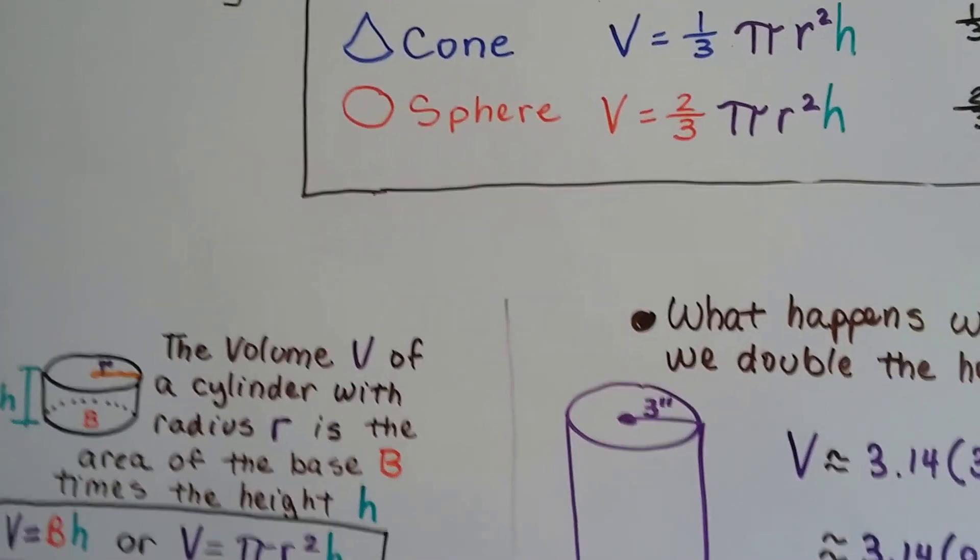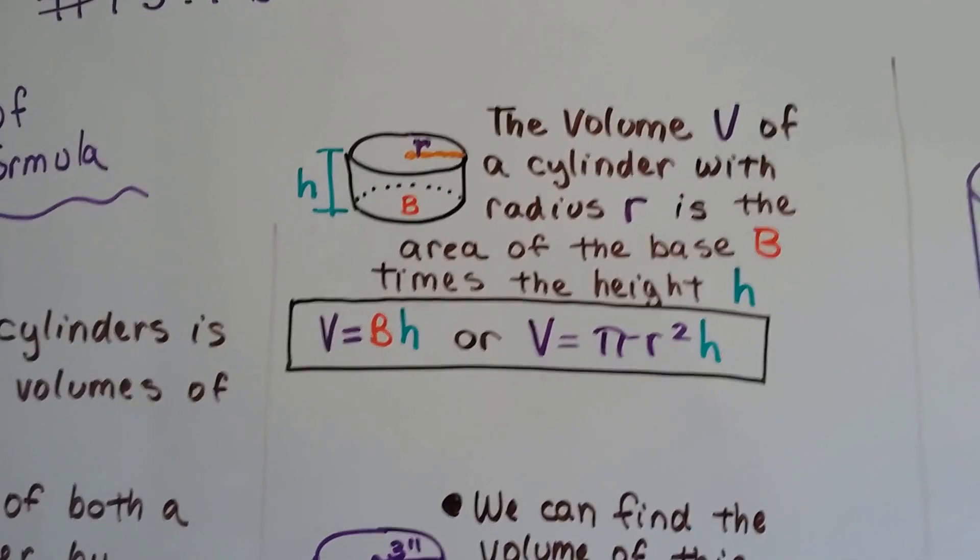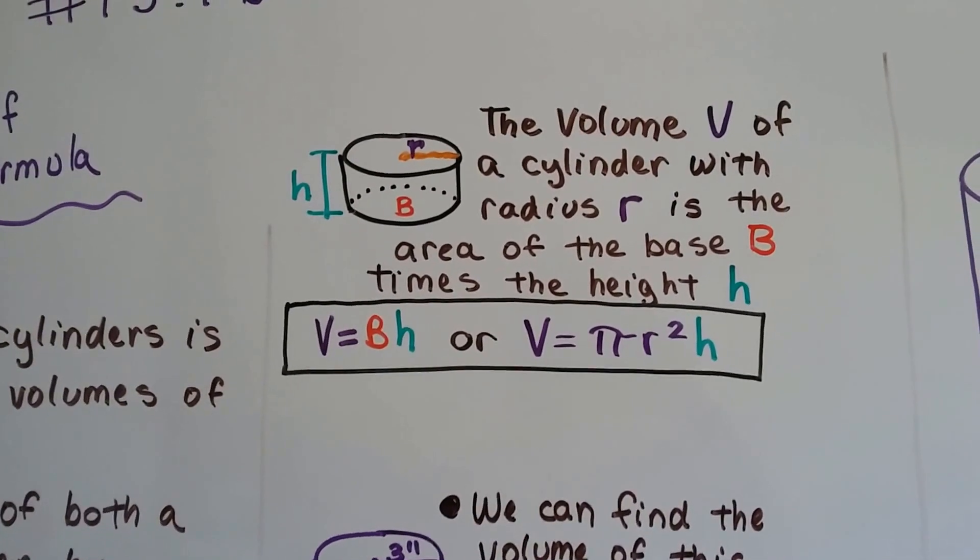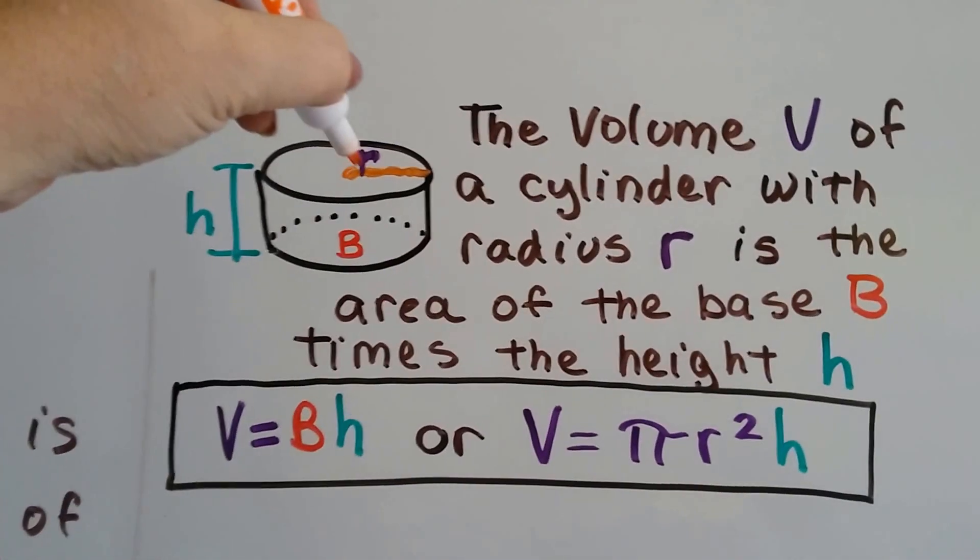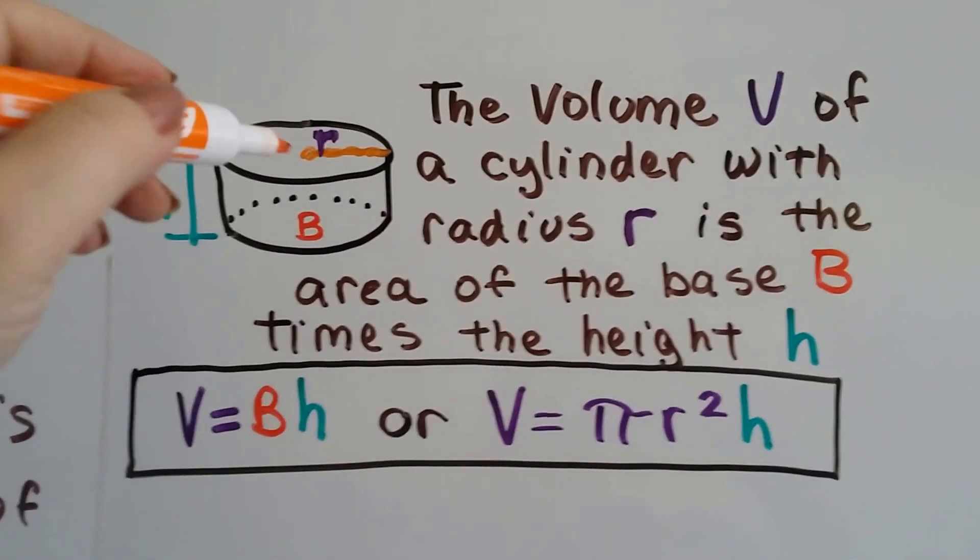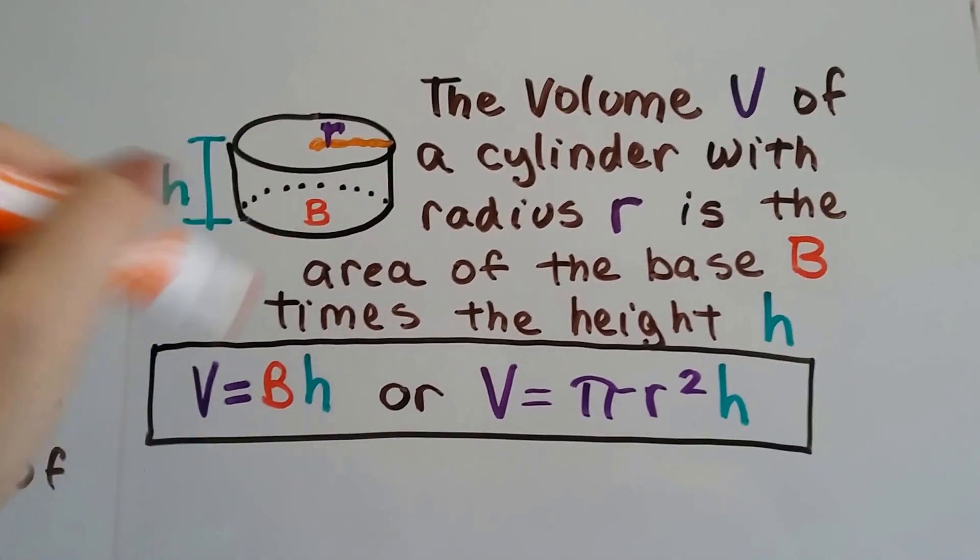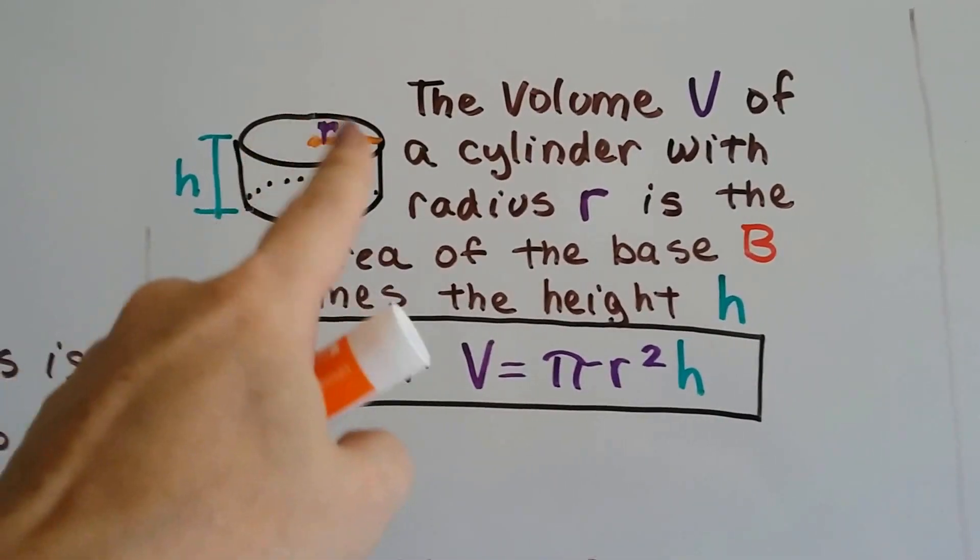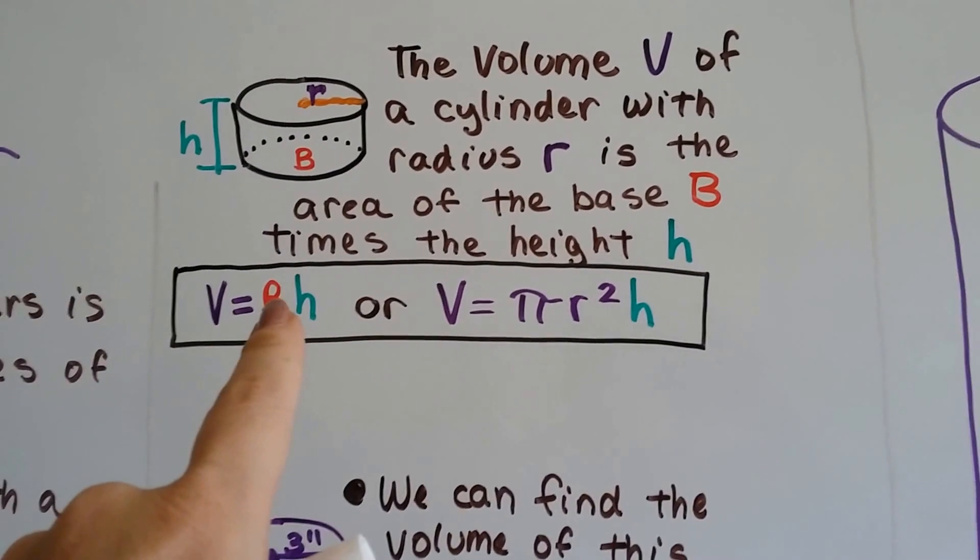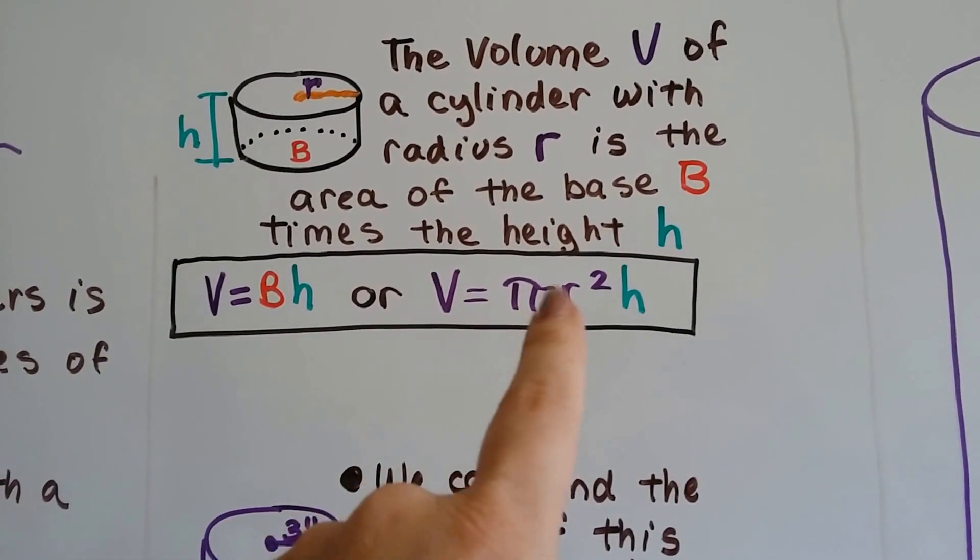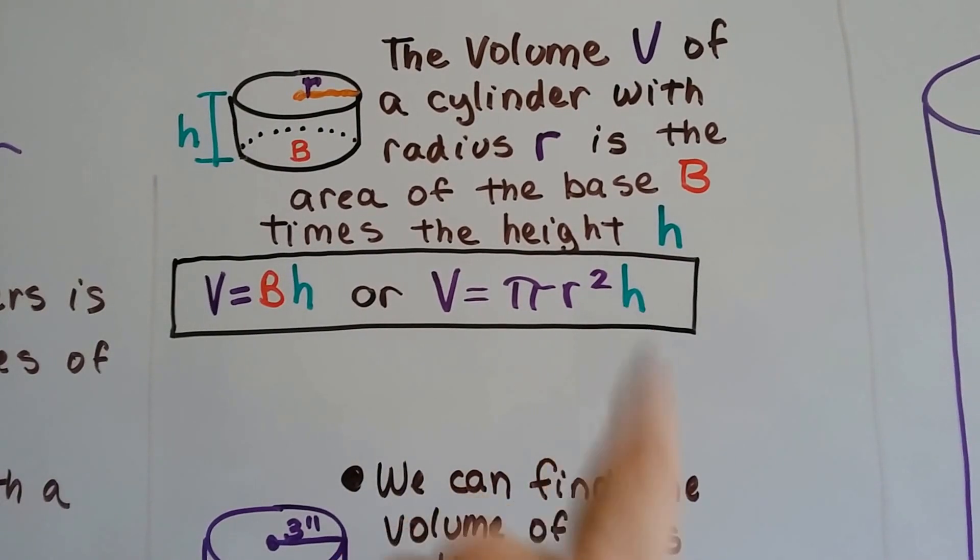So the volume V of a cylinder with radius r is the area of the base B times the height h. So here's our radius right here from the center point to the edge. And this is a base and this is a base. All we have to do is find out what the area of this circle is and multiply it by the height. So that's volume equals base times height or volume equals pi r squared height.